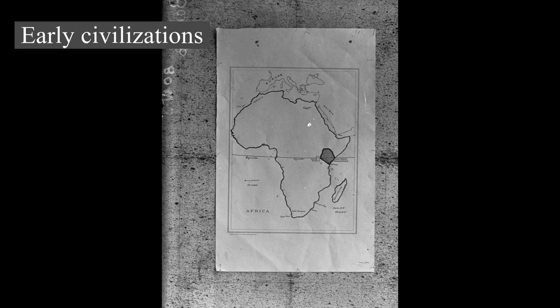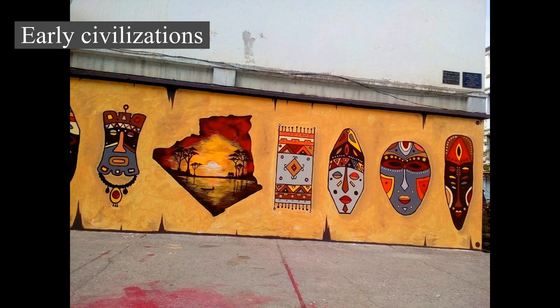Christianity spread across these areas at an early date — from Judea via Egypt and beyond the borders of the Roman world into Nubia. By AD 340 at the latest, it had become the state religion of the Aksumite Empire. Syro-Greek missionaries, who arrived by way of the Red Sea, were responsible for this theological development.